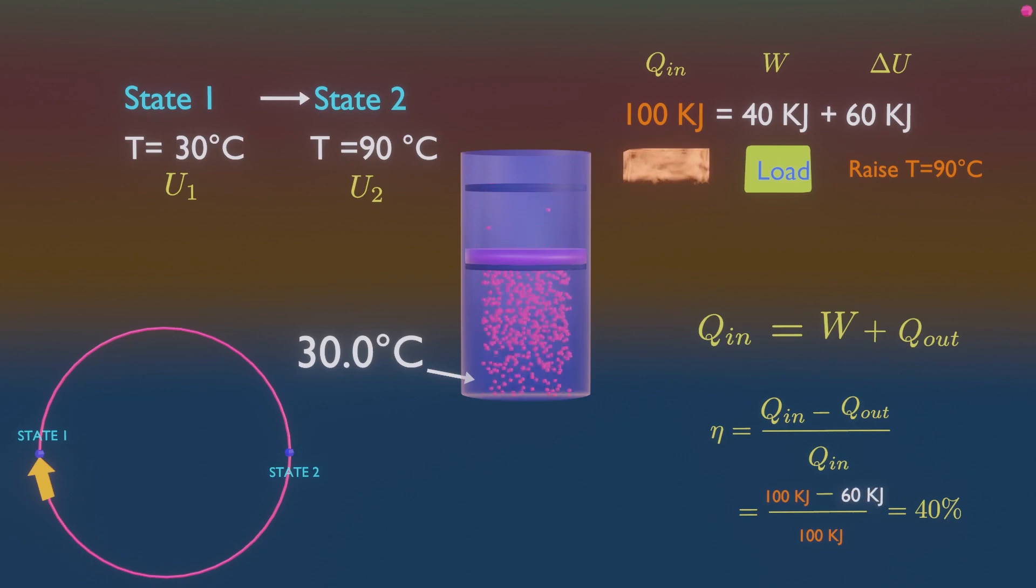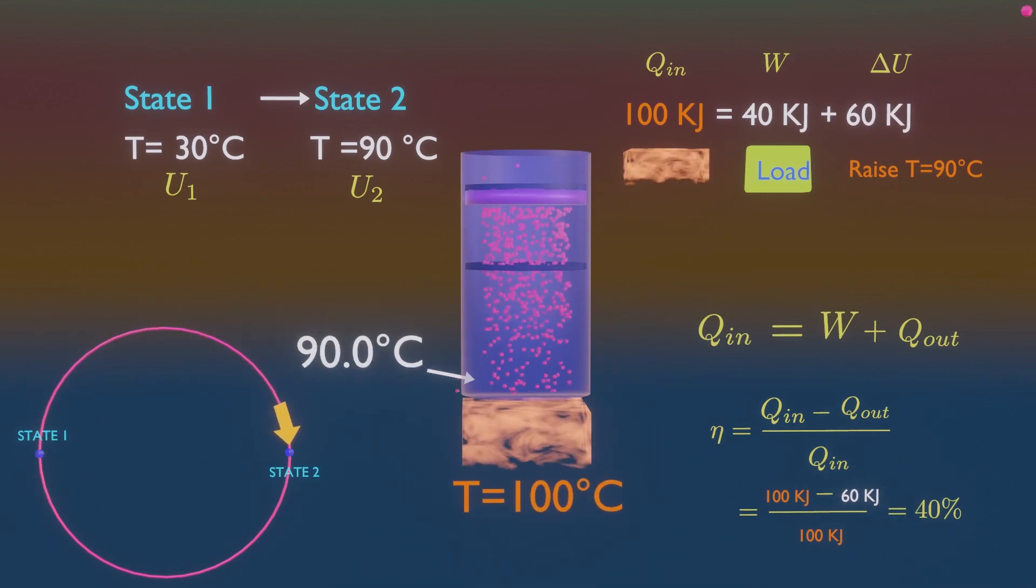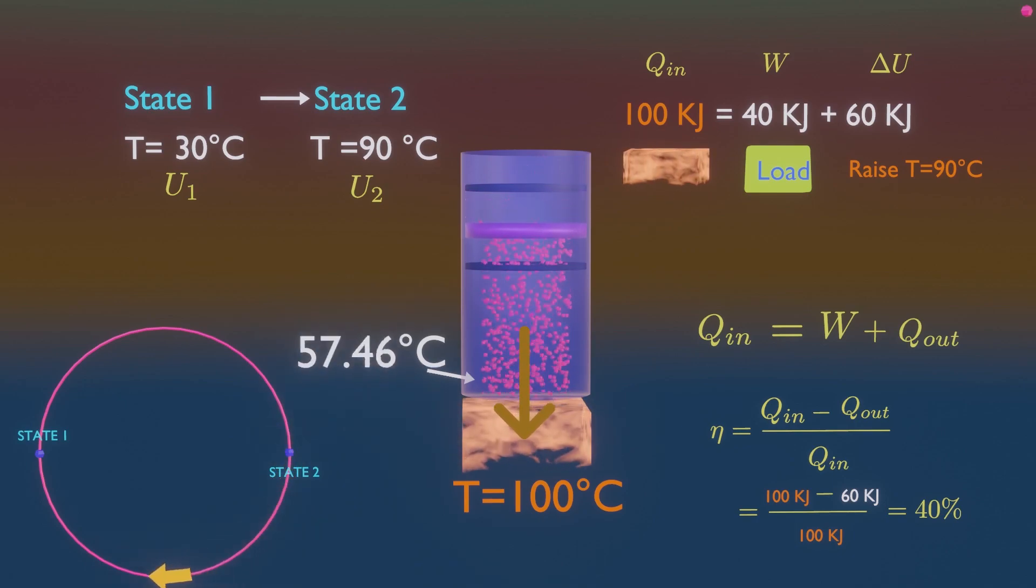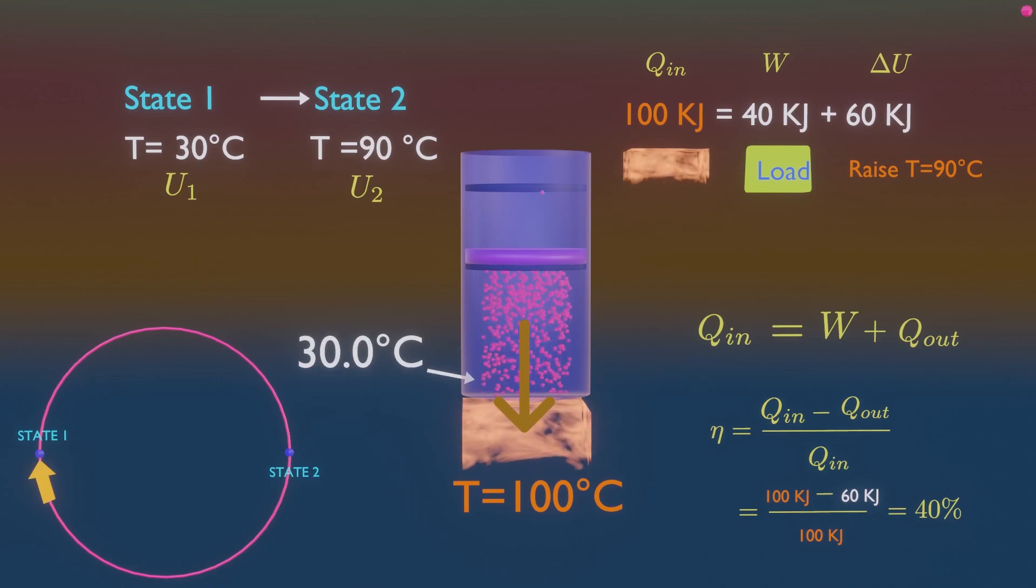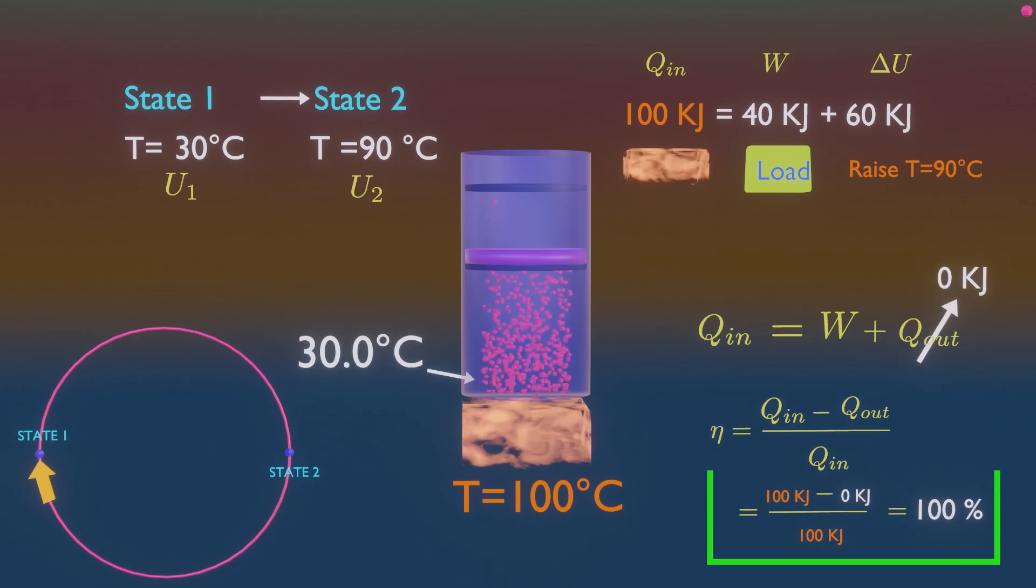But if you do not follow second law and follow first law only, then you can conserve this excess heat. Because first law is still valid if you assume that heat can reverse its direction and can travel from lower temperature to higher temperature and complete the cycle. So if this gas is cooled back to initial state by transferring heat back to hotter body, then zero heat is rejected to environment or colder body. Now there is zero waste energy. The thermal efficiency would be 100%, which means every heat given is utilized to do work.